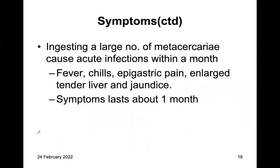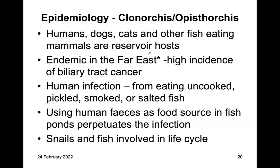In large ingestion, a large number of metacercariae can cause acute infection within a month — fever, chills, epigastric pain, large tender liver, and jaundice — with symptoms lasting about one month. In small numbers of metacercariae, infection takes a long time to develop. Clonorchis and Opisthorchis epidemiology: reservoir hosts are humans, dogs, and other fish-eating mammals. Endemic in Far East with high incidence of biliary tract cancer. Human infection comes from eating undercooked, pickled, or smoked saltfish. Human feces used in fish ponds can perpetuate the infection.